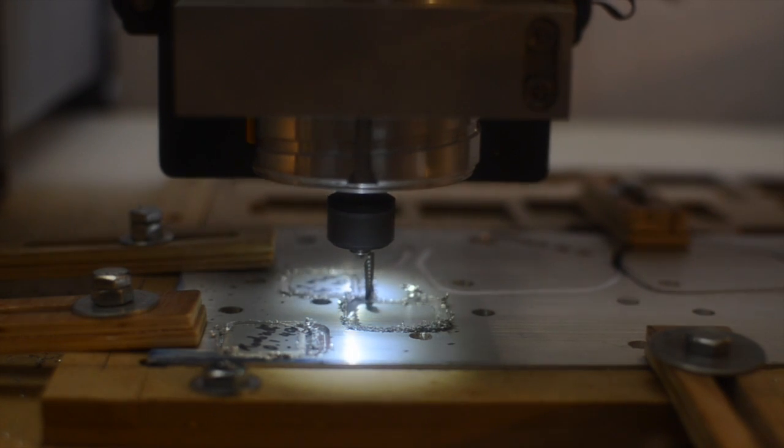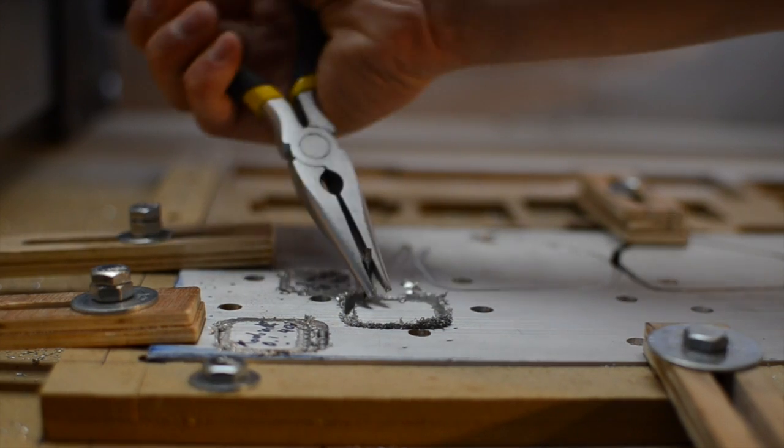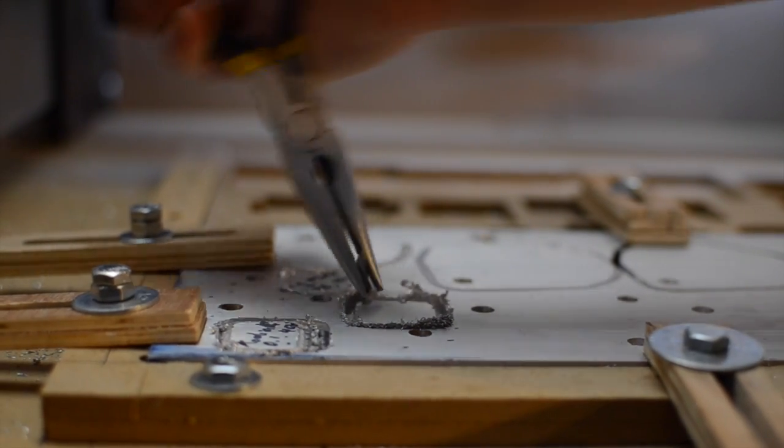First and foremost are your feed rate and spindle speed. This is important because endmills work best when they take a particular size bite out of your working stock, and that amount of bite changes with different materials.